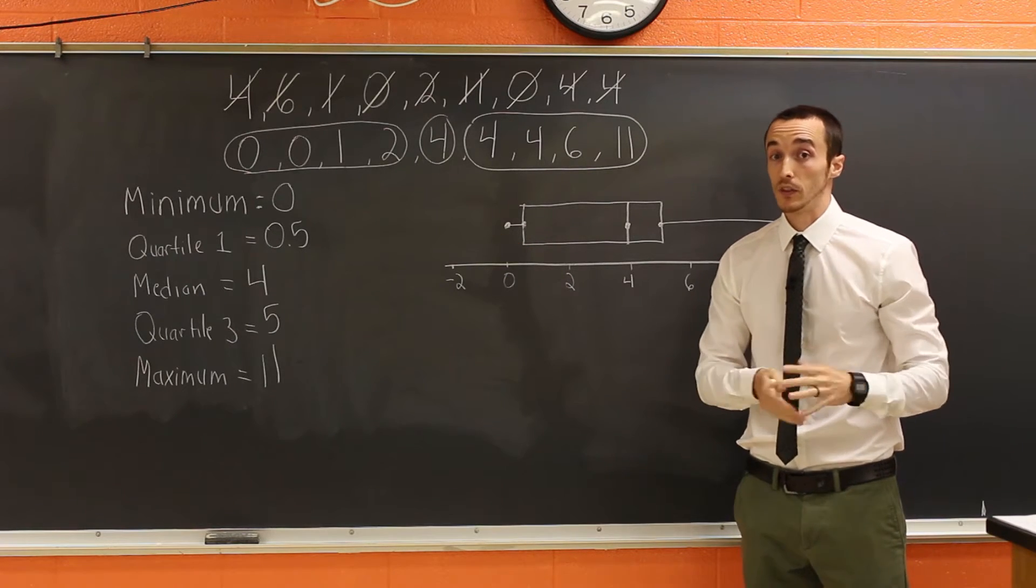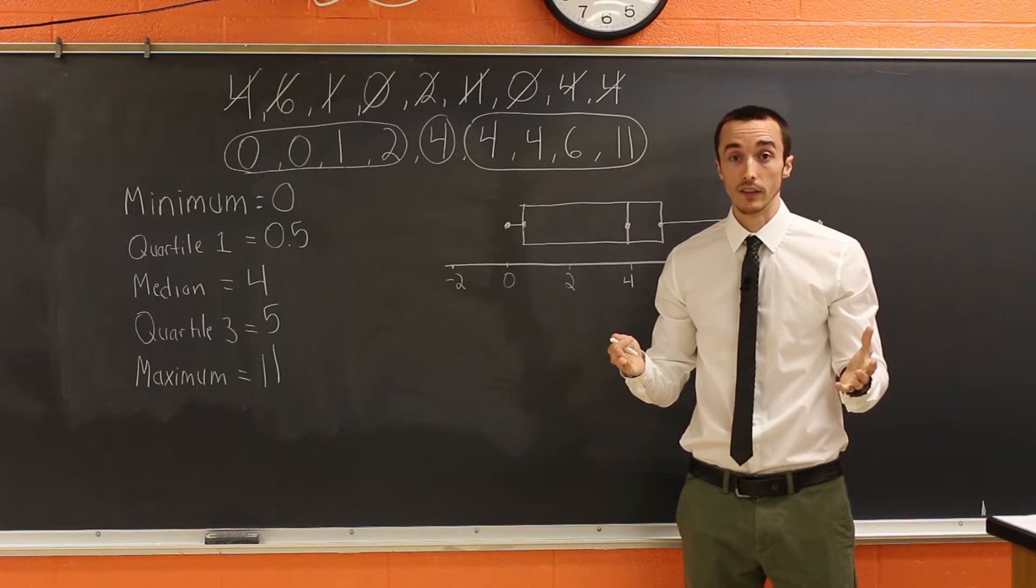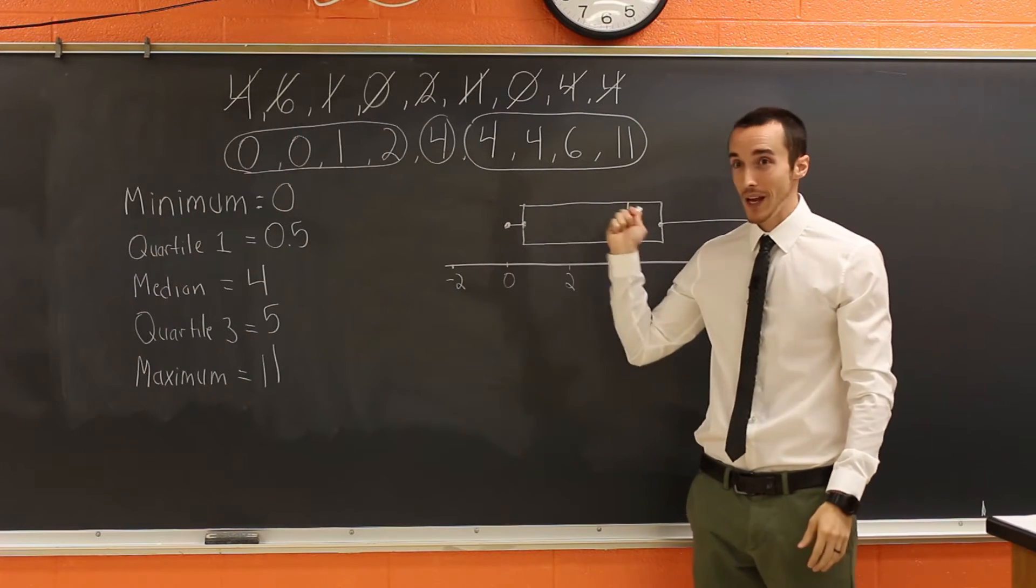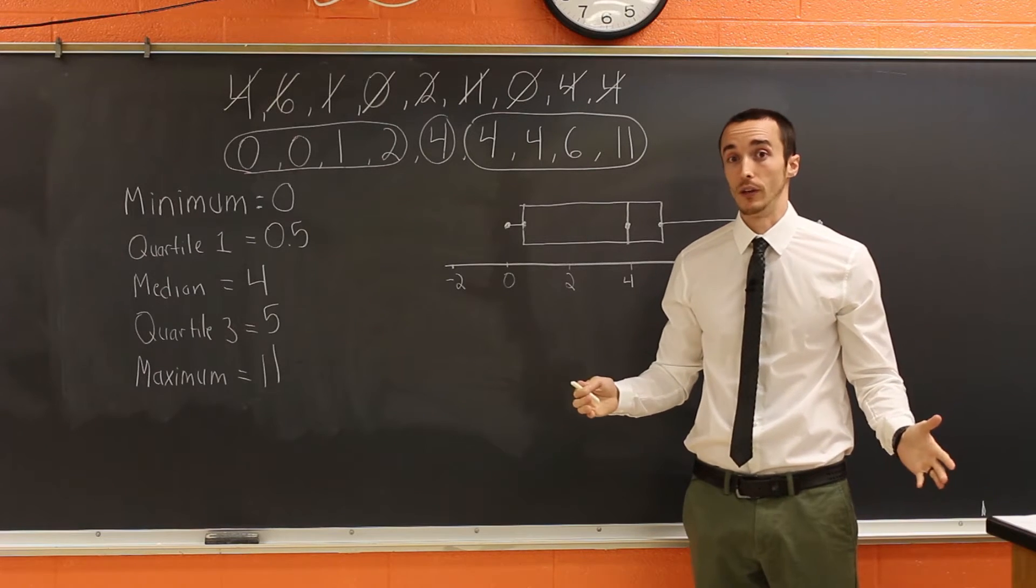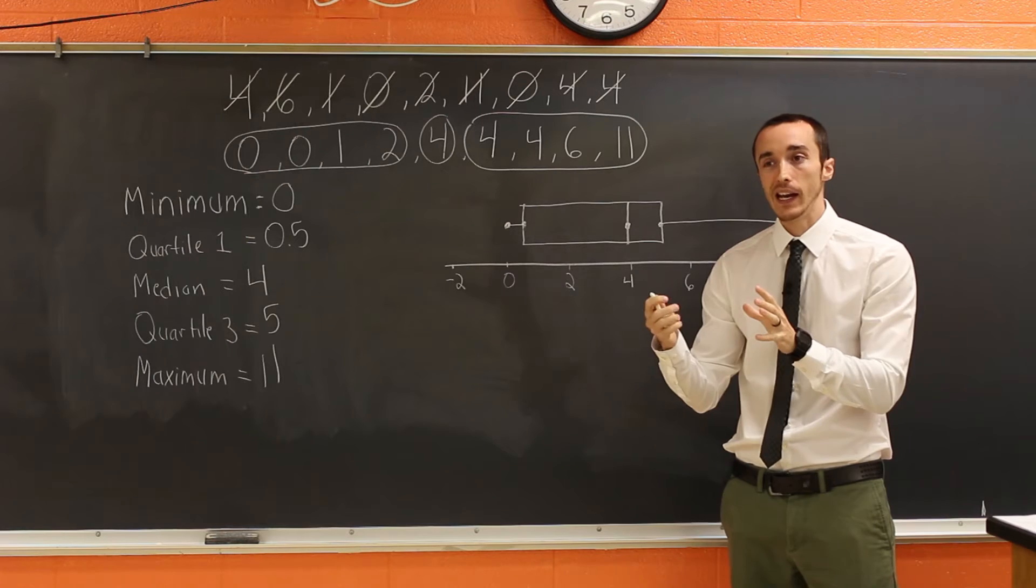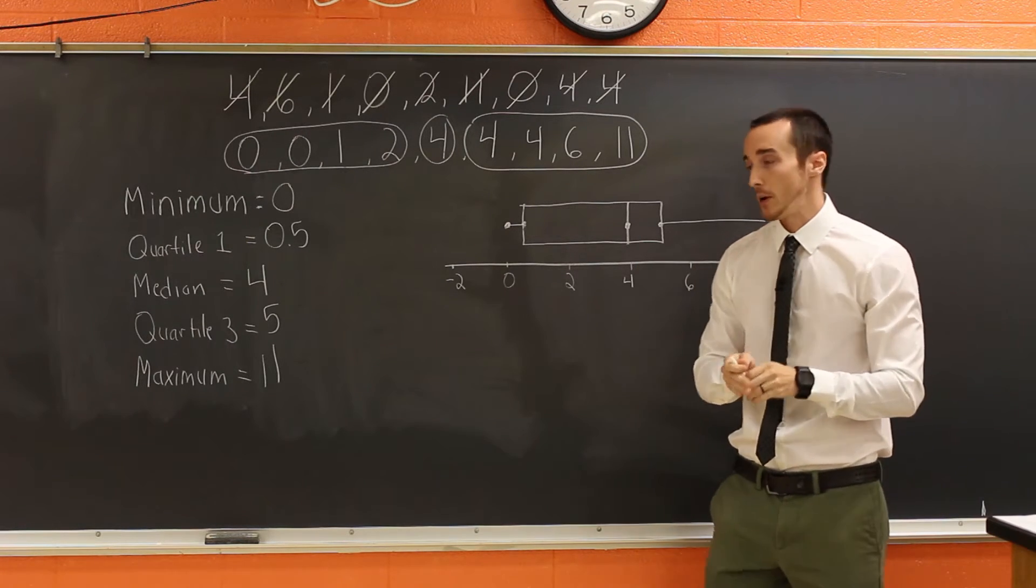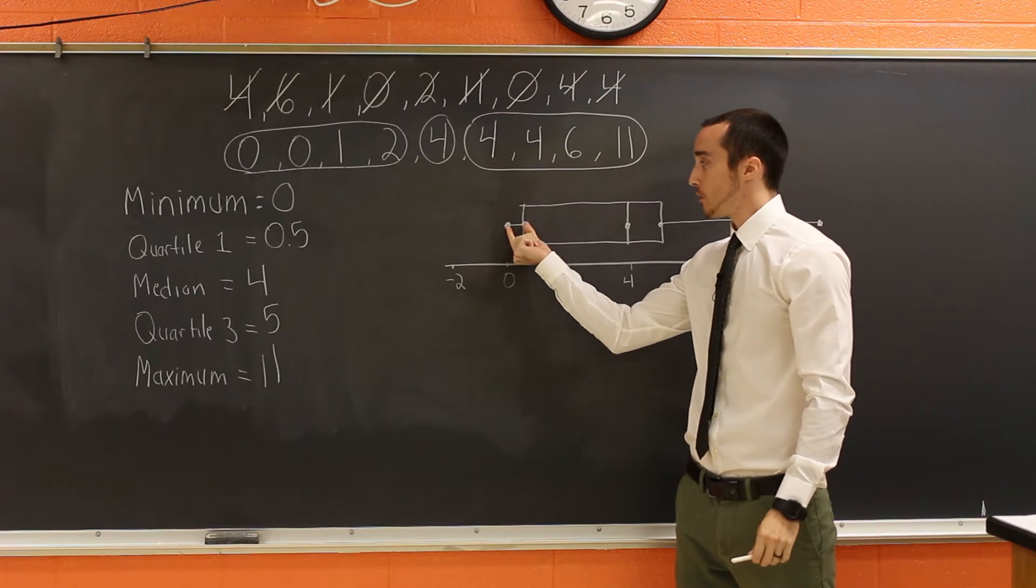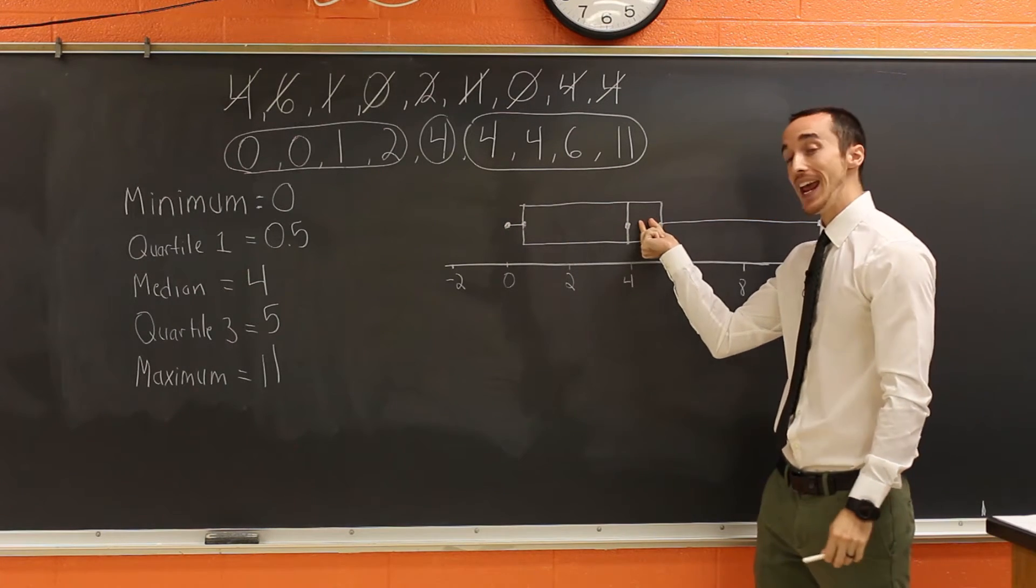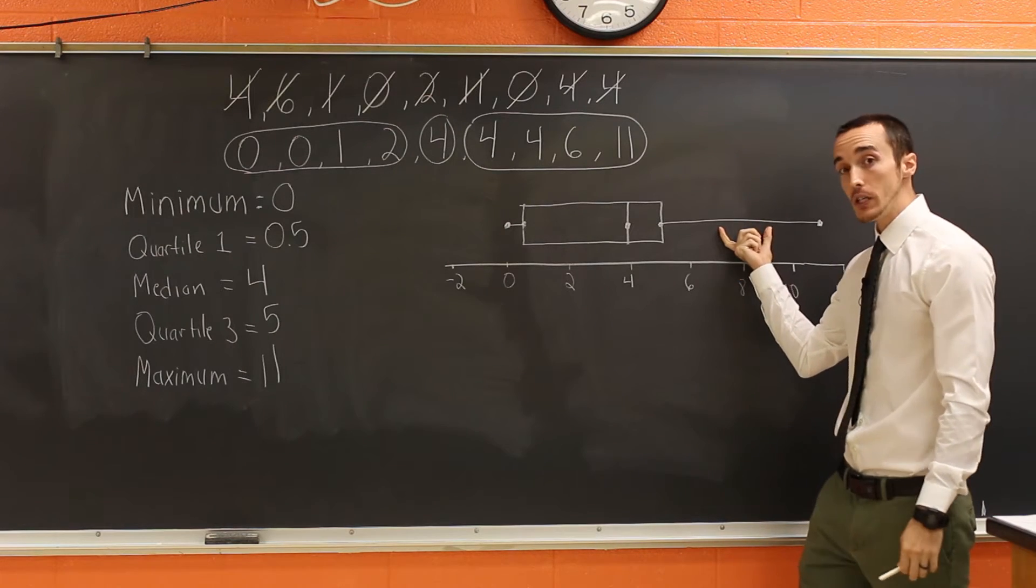That's how you make a box and whisker plot, but it's important to understand why you would use this. So often we make box and whisker plots in a math class and have no idea why we're doing it. Well, here's what it shows you. It shows you how spread out your data is, or if there's a concentration of data in a certain part. In each one of these brackets that contains one fourth or a quarter, that's why they're called quartiles, of our data.